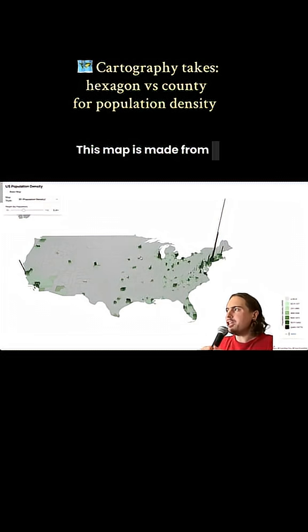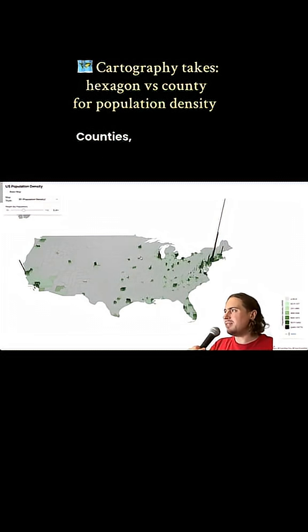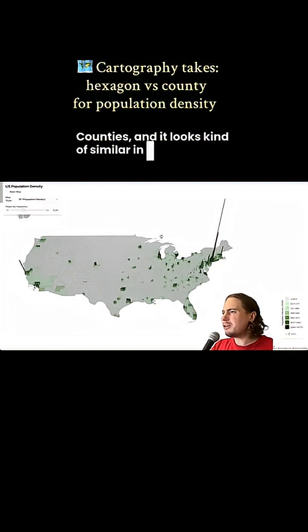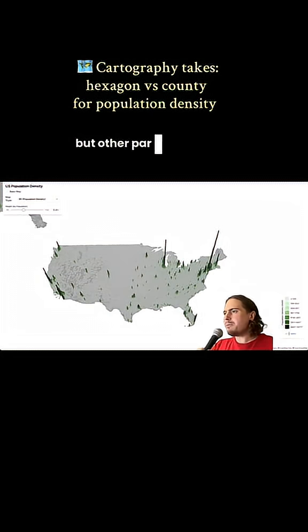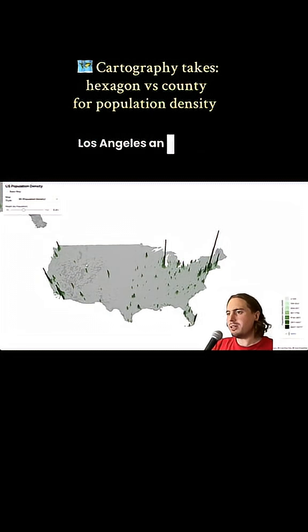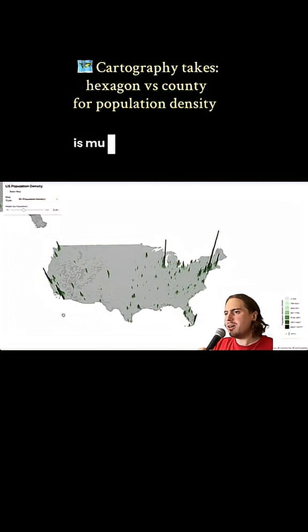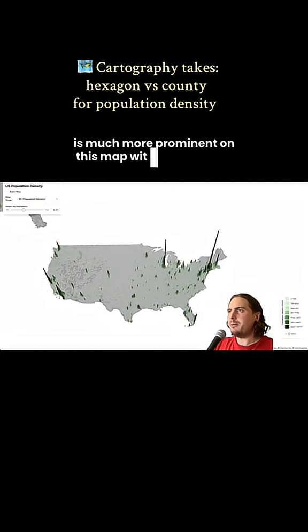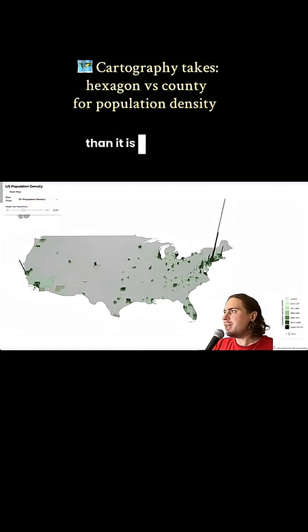This map is made from U.S. counties, and it looks kind of similar in places like the Northeast, but other parts of the country look very different. Los Angeles and Southern California in general is much more prominent on the hexagon map than it is on this map of counties.